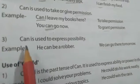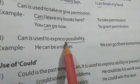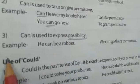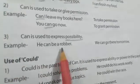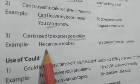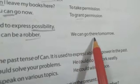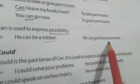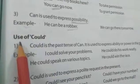The third use of can is to express possibility — how much chance there is of something happening. Example: 'He can be a robber' — there is a possibility that he can become a robber. 'We can go there tomorrow' — there are chances that we can go there tomorrow. So I hope the use of can is clear.